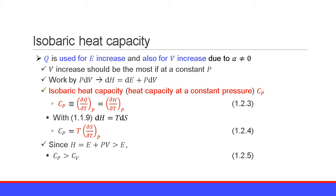In this case, we define the isobaric heat capacity Cp. Cp is defined as the partial derivative of heat Q with respect to temperature T at constant pressure P, which equals the partial derivative of enthalpy H with respect to temperature T at constant pressure P. Equation 1.2.3.